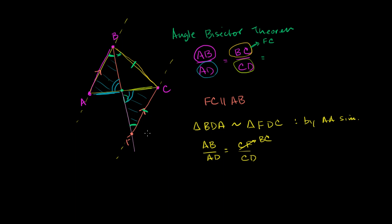There were two key things we had to do here: first, construct this other triangle by drawing FC parallel to AB — that gave us an additional angle to show similarity via angle-angle. Second, it allowed us to establish the larger isosceles triangle, so that finding the ratio of those sides in the similar triangle is analogous to showing the ratio of AB to AD equals BC to CD. And we are done.